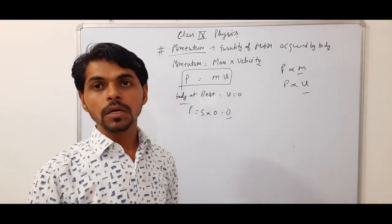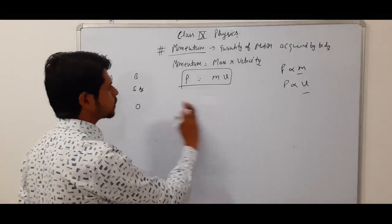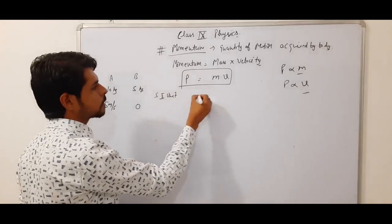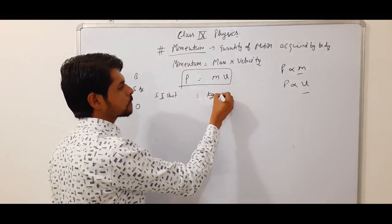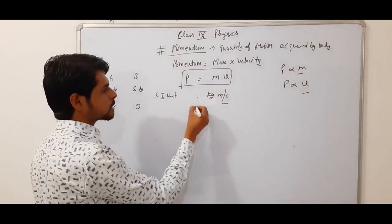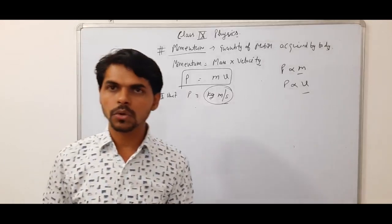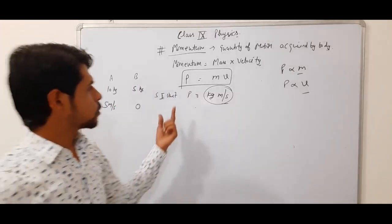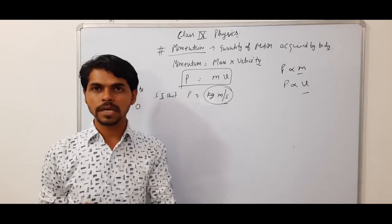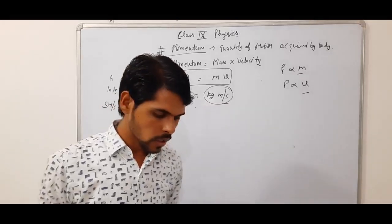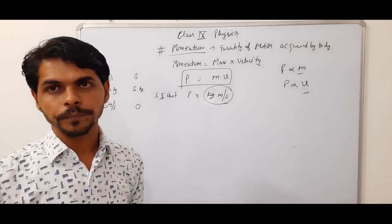Let us find out the units of momentum. What is the SI unit of momentum? The SI unit of mass is kilogram and the SI unit of velocity is meter per second. So the SI unit of momentum is kilogram meter per second.